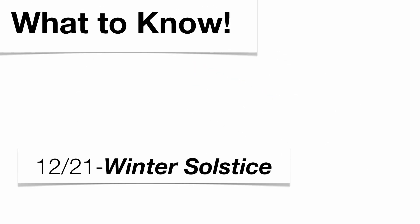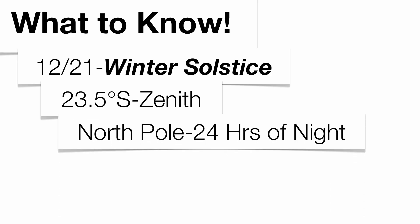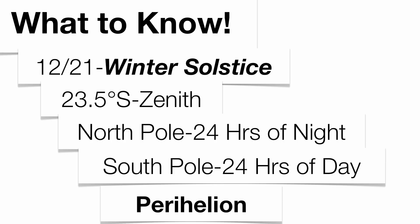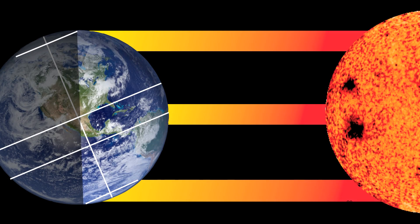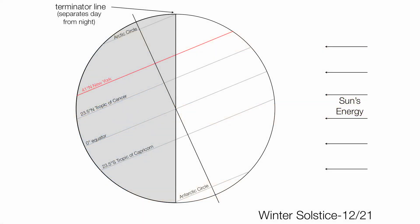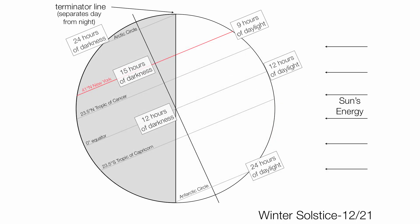For the winter solstice: December 21st, the Tropic of Capricorn is the location where the sun is at the zenith. The North Pole gets 24 hours of nighttime, and the South Pole gets 24 hours of daylight. This is a position called perihelion — we're technically closer to the sun in winter, but the northern hemisphere is tilted away from the sun. New York gets only nine hours of daylight, making it the shortest day of the year for New York State. To summarize: the Arctic Circle gets 24 hours of darkness, New York gets 9 hours, the equator gets 12 hours, and the Antarctic Circle gets 24 hours of daylight. The Tropic of Capricorn is getting the most direct sun on this day.